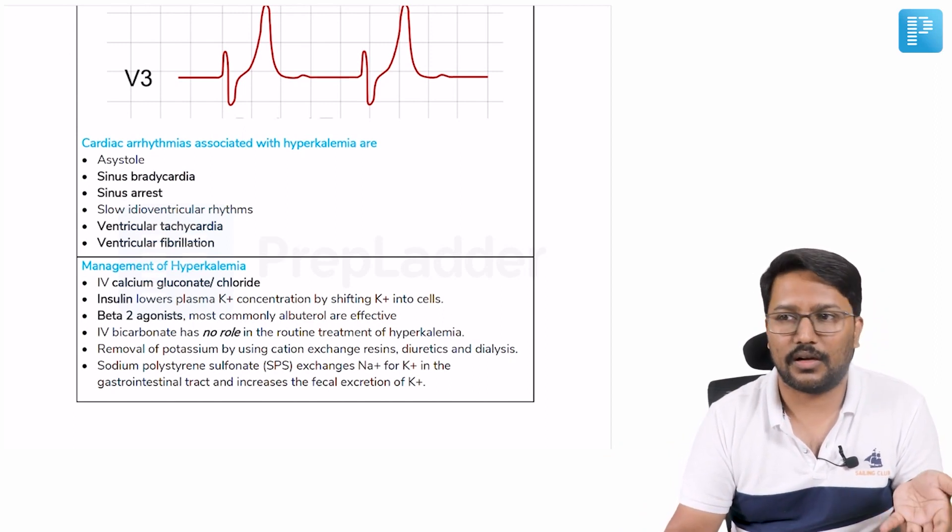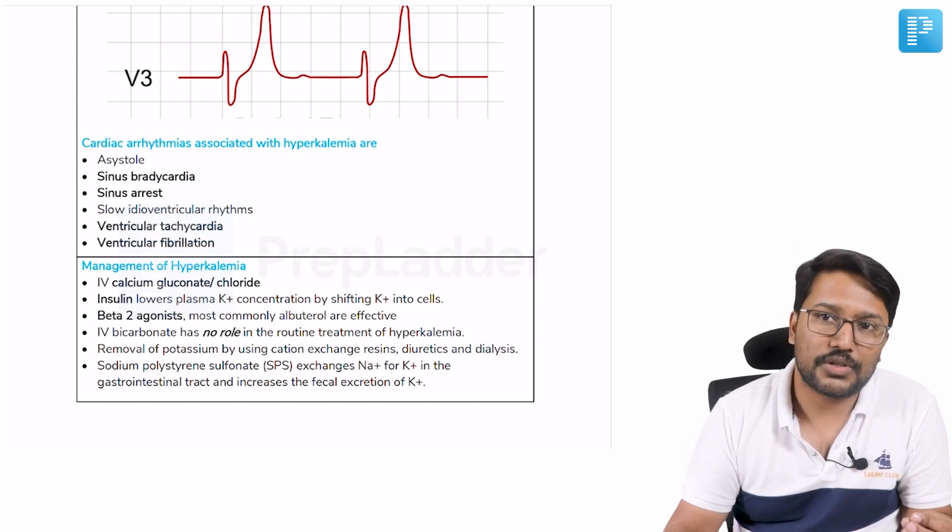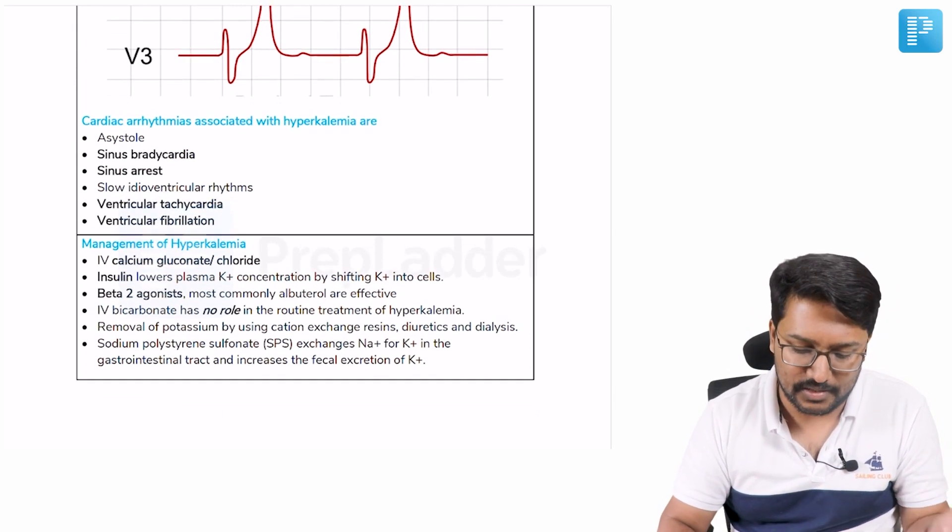The only absolute indications for initiation of dialysis in the acute setting are basically the ones which are associated with uremic manifestations: uremic pericarditis, uremic encephalopathy, and severe symptomatic uremia.